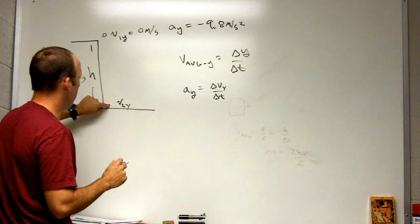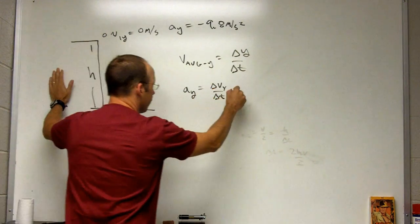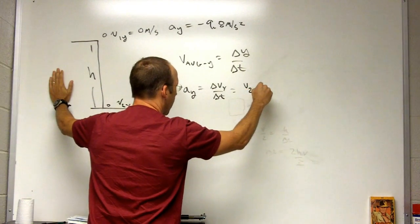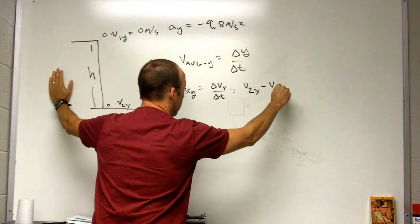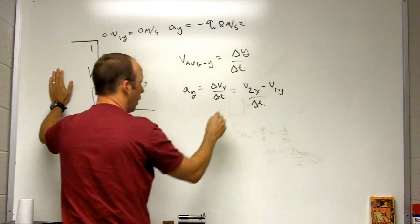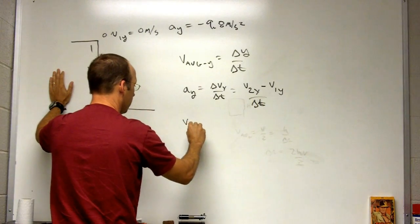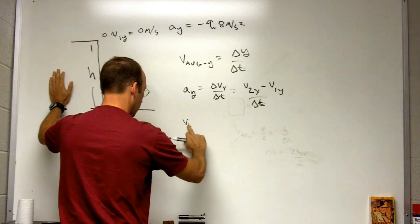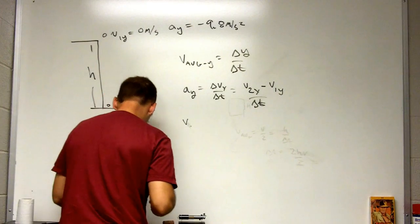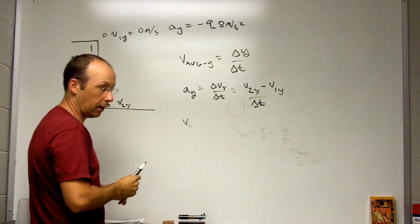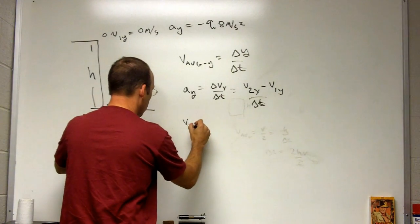I want to find the velocity at the bottom, so I can use this. This is v2y minus v1y over delta t. So I can solve this for v2y. This marker is not very good either, I'm going with it.